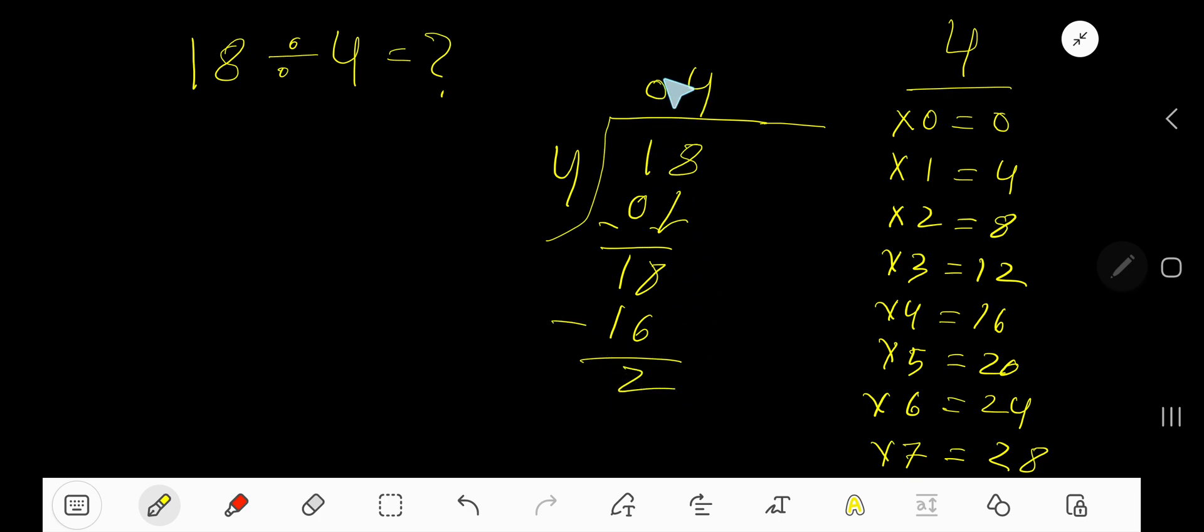So our answer is 04, remainder 2. So 4 remainder 2 is our answer. 04 means 4.